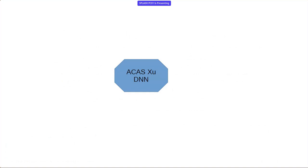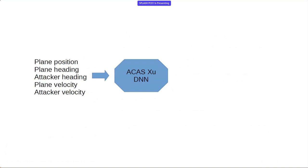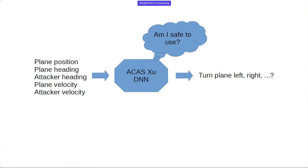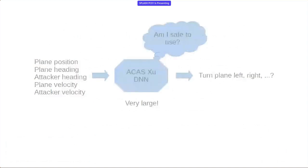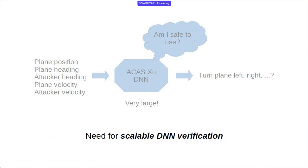Here's one example neural network that's a little different from image or speech recognition: it's the ACAS-XU network. This one controls a plane. You tell it there's an incoming plane coming from your left, and it tells you to turn the plane to the right. This is kind of scary — we want to know: is this network safe to use? Verification algorithms don't scale well when there are many nodes; they take quite a bit of time.